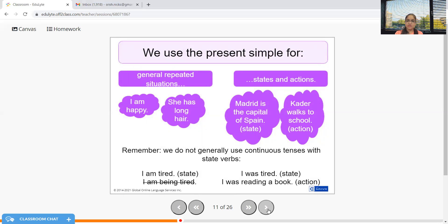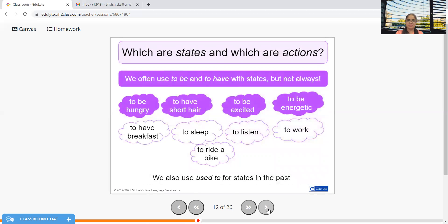We do not generally use continuous tenses with state verbs like 'I am tired,' 'I was tired.' 'I'm being tired' would be incorrect - be careful of what you are saying. We often used 'to be' and 'to have' for states, but not always. We also use 'used to' for states in the past.